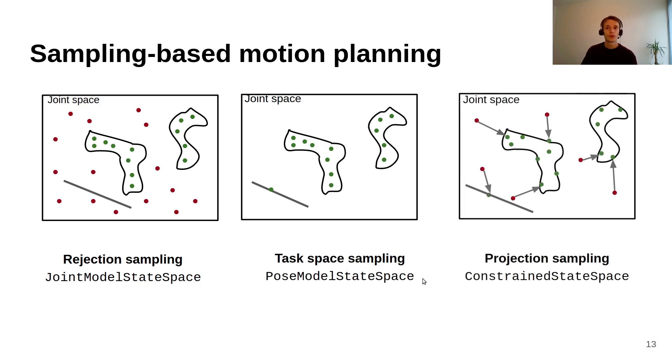So the new solution, the projection-based sampling planner, will start the same as the rejection-based sampling. We generate random configurations in joint space, but then instead of throwing away the invalid ones we project them onto the constraints. This works for this constraint region here, but it also works for the zero volume constraints. And as we are doing planning completely in joint space, we don't have this problem of creating these invisible jumps in the path.